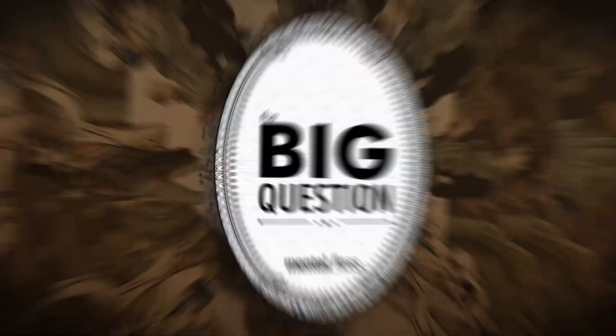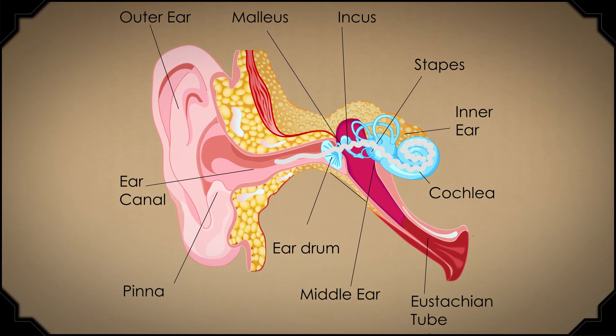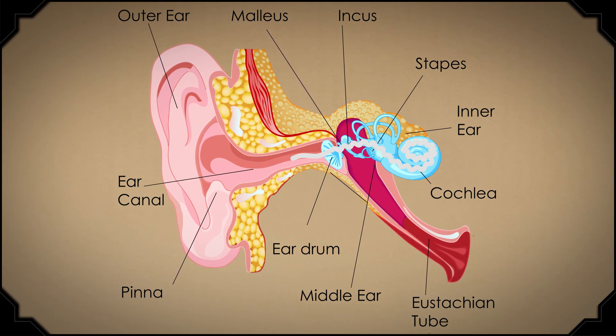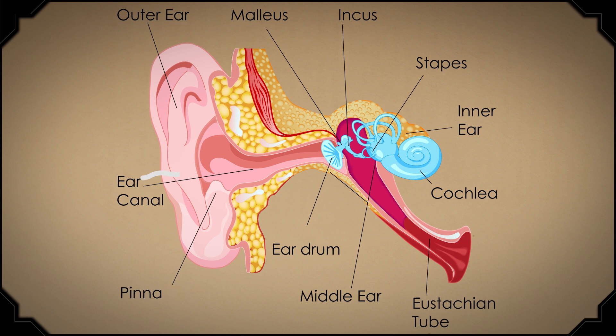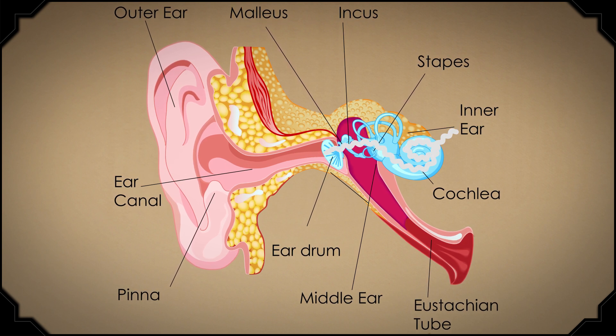So as you know from the other episodes we've done on sound, sound comes into our ears in the form of waves, and it's the outer ear that captures those waves and sends them into the ear canal. Then the waves cause the eardrum to vibrate. The vibrations make their way through the inner ear, including the cochlea, which is the auditory portion of the inner ear. Then the vibrations become signals that the auditory nerve in the brain is able to make sense of.